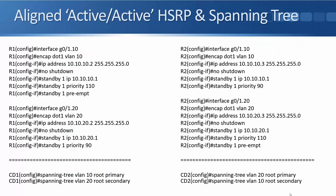For VLAN 20, it's really just the mirror opposite configuration. On R2, I give it IP address 10.10.20.3, and I've set standby 1 priority 110 and standby 1 preempt. For R1, I give it the physical IP address 10.10.20.2 and priority 90. The gateway virtual IP I'm using is 10.10.20.1. So R2 will be the HSRP active gateway for VLAN 20 using IP address 10.10.20.1.